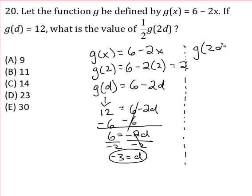Okay, so what do we know? d is negative three, so that's g of two times negative three. So that's g of negative six.